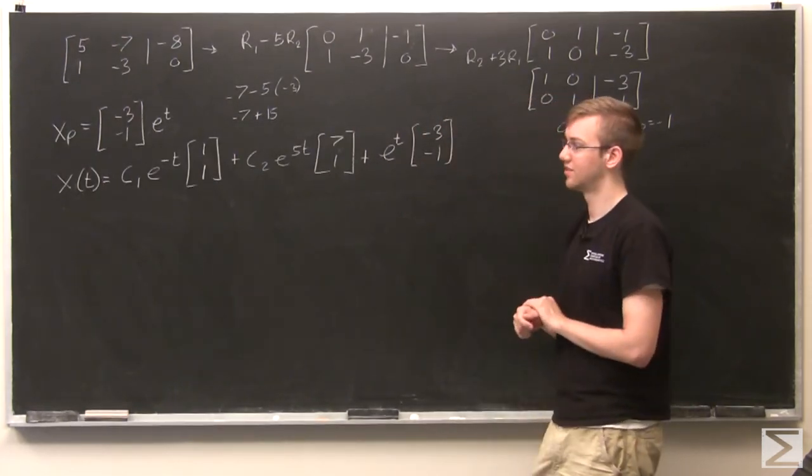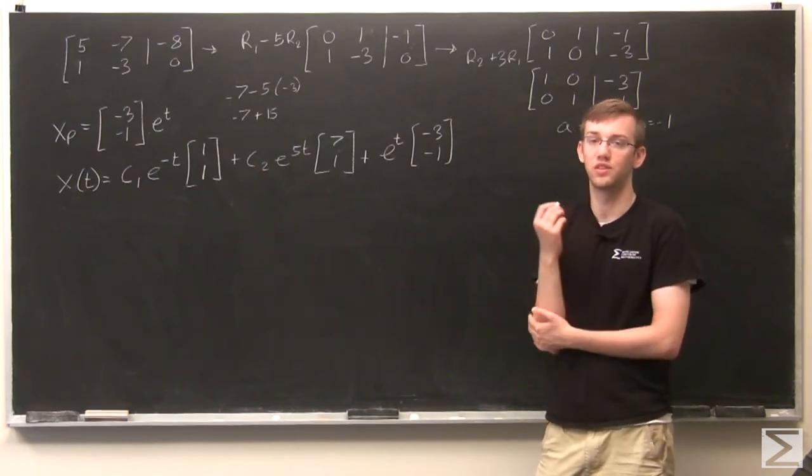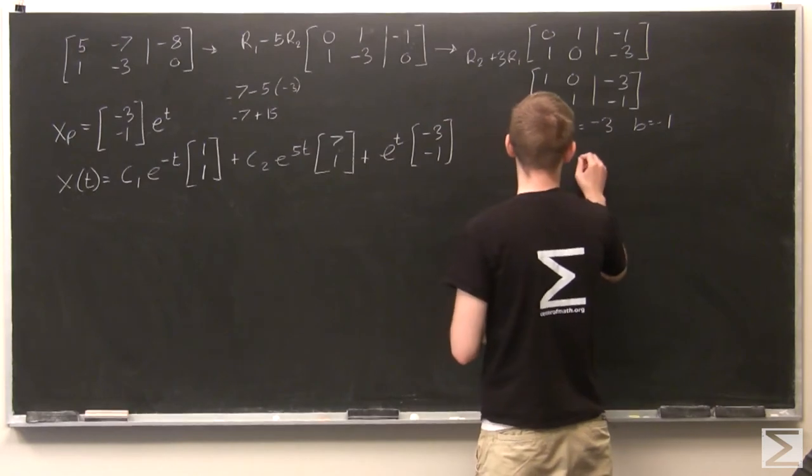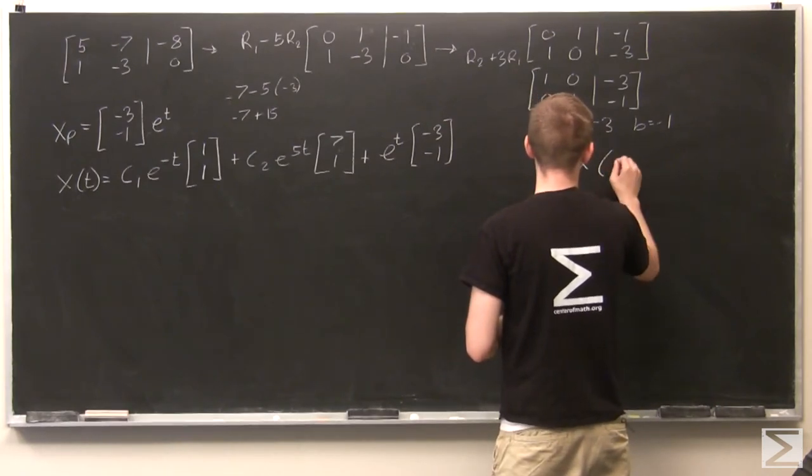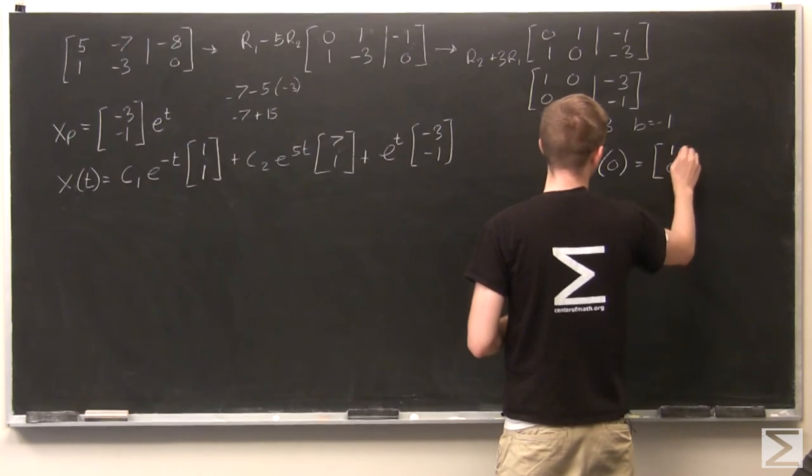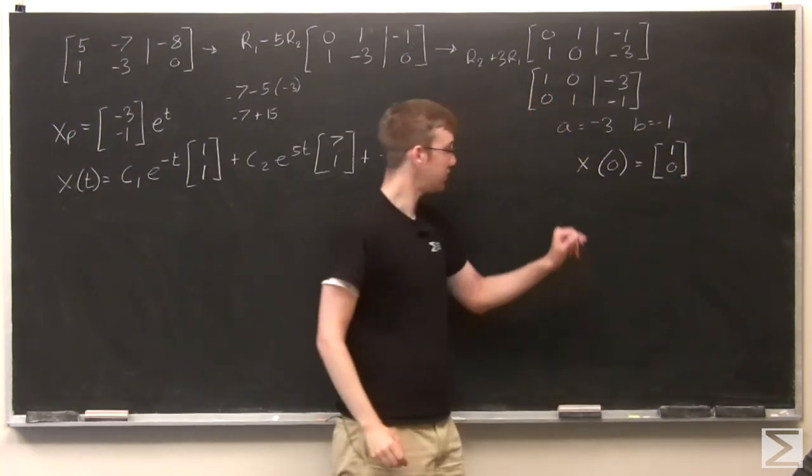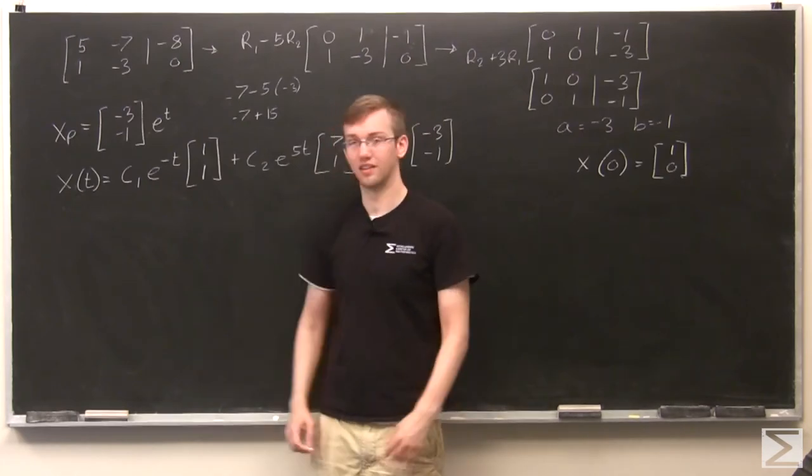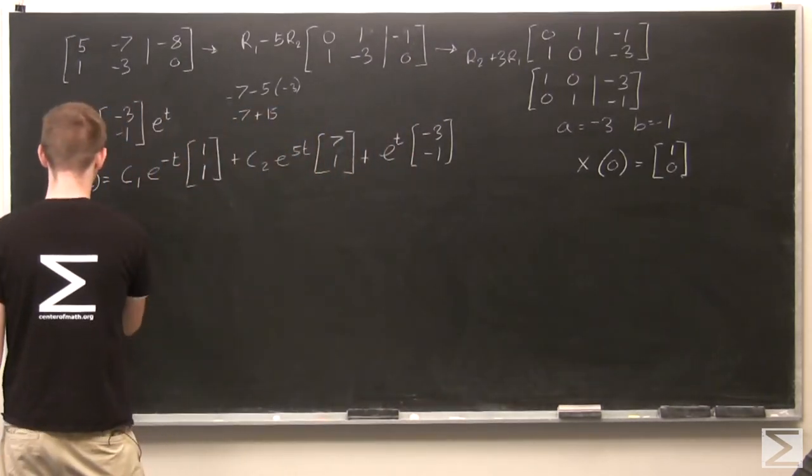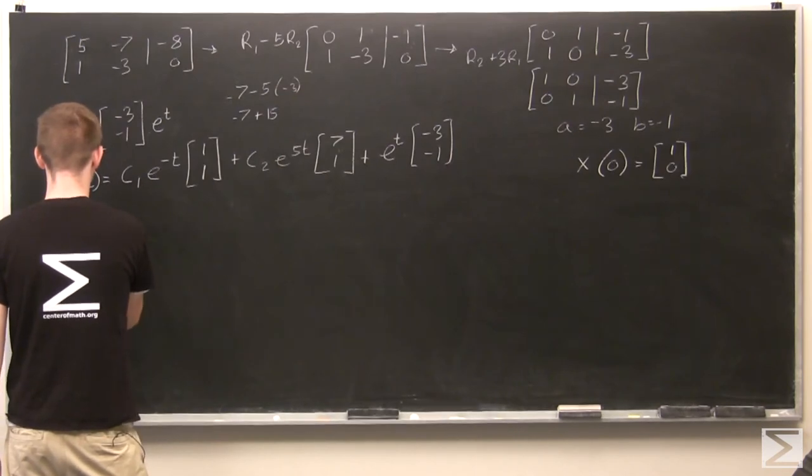All that's left is to find the particular solution with initial constraints. I'm also going to copy this from the other board, just to make things easier. If you remember, my x(0) was [1, 0]. So we're going to put that into our equation and see what happens.